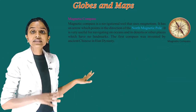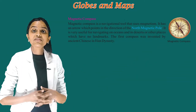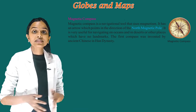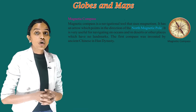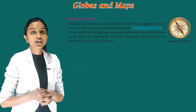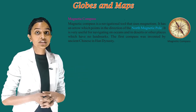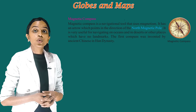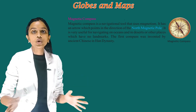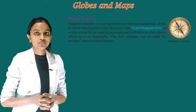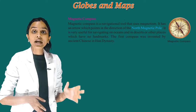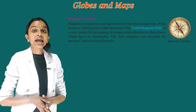Magnetic Compass: A magnetic compass is a navigational tool that uses magnetism. It has an arrow which points in the direction of the north magnetic pole. It is very useful for navigating on oceans and in deserts or other places which have no landmarks. The first compass was invented by ancient Chinese in the Han dynasty.